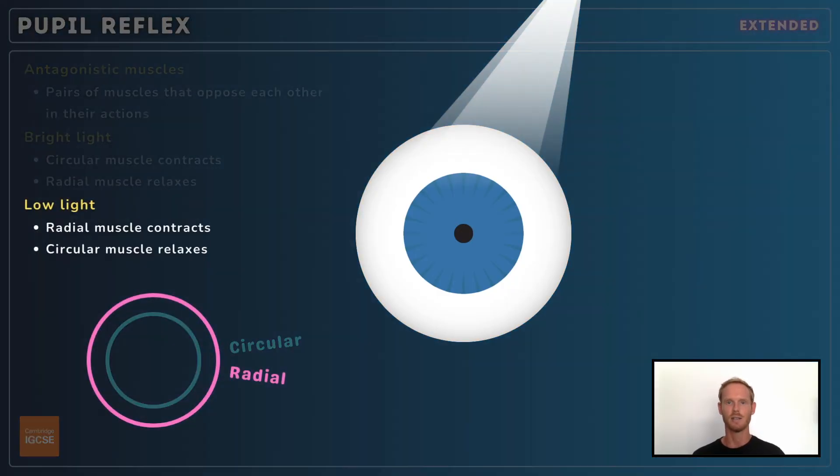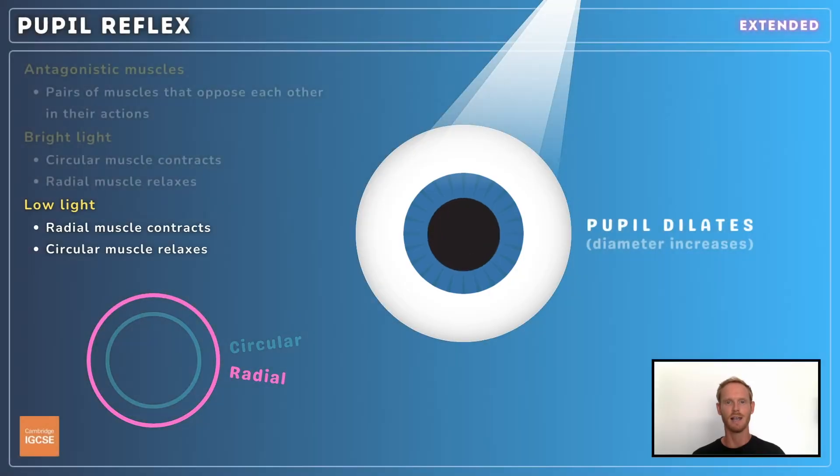In low light intensities, the radial muscle contracts and the circular muscle relaxes. This dilates or enlarges the pupil, allowing more light to enter.